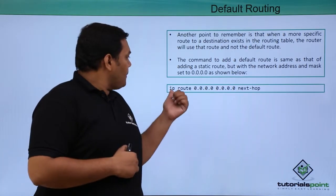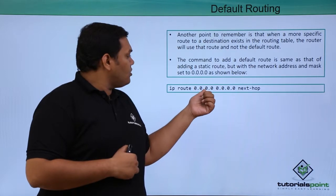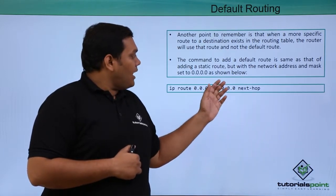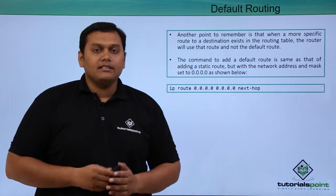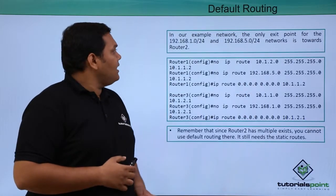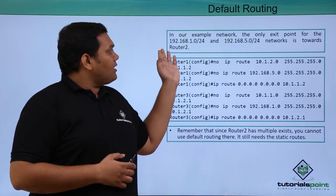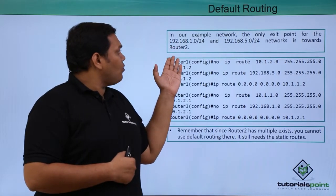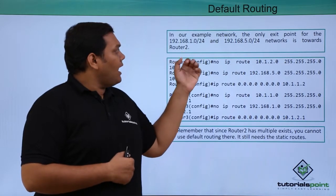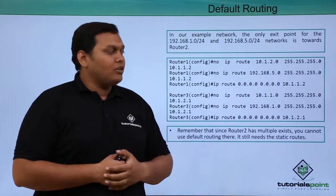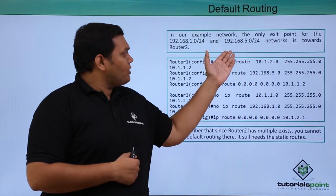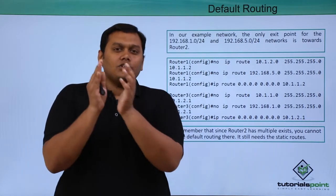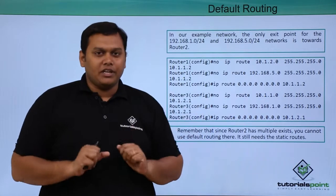The syntax is: IP route 0.0.0.0 0.0.0.0 followed by the next hop details. For example, the exit point for the network is 192.168.1.0/24, and the 192.168.5.0/24 network is towards Router 2. These networks are towards Router 2 and the exit interfaces are mentioned accordingly.